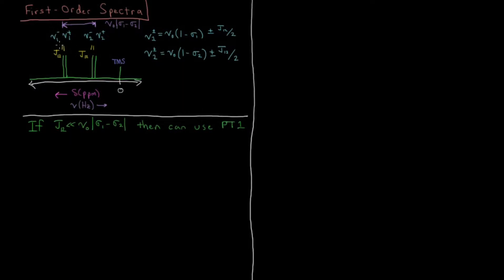This is proton1 marked at the higher chemical shift and proton2 at the lower chemical shift. The difference between the shielding constants determines the difference between the chemical shifts.